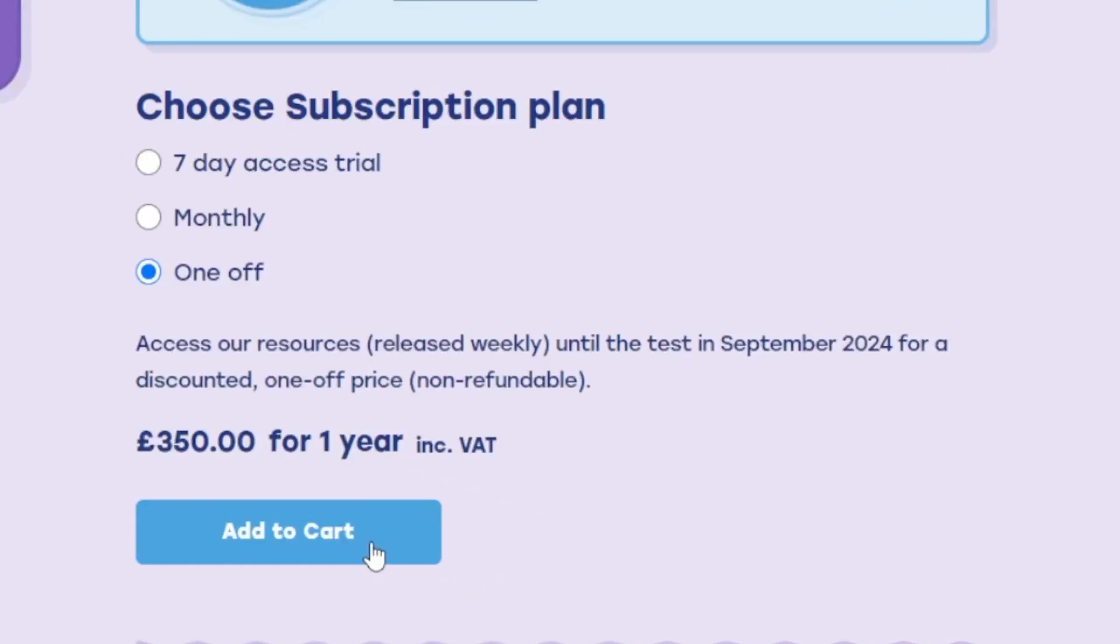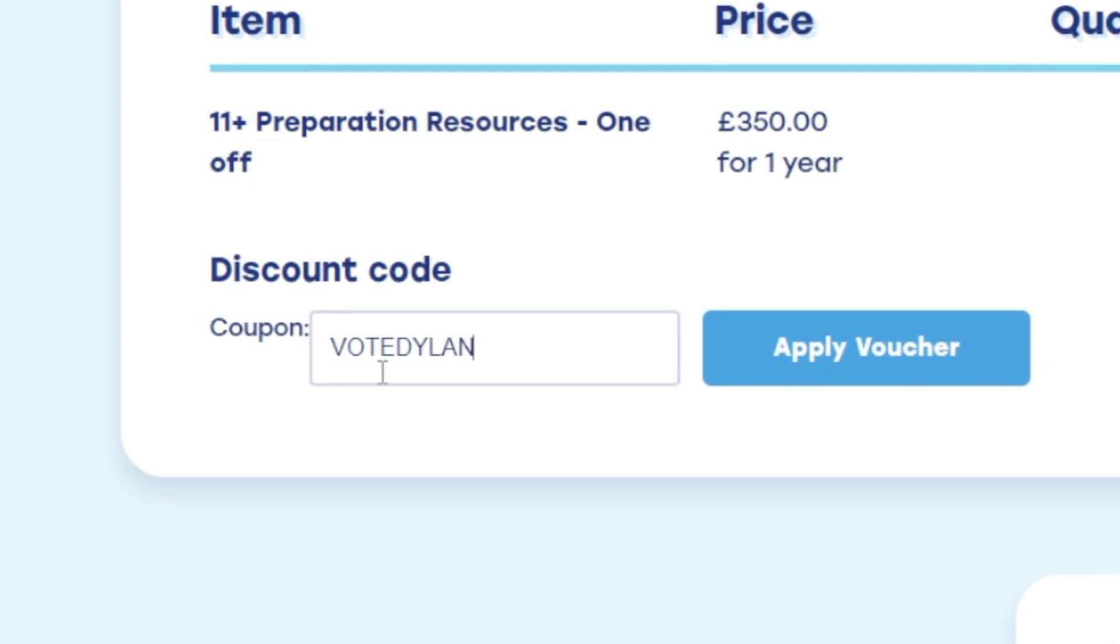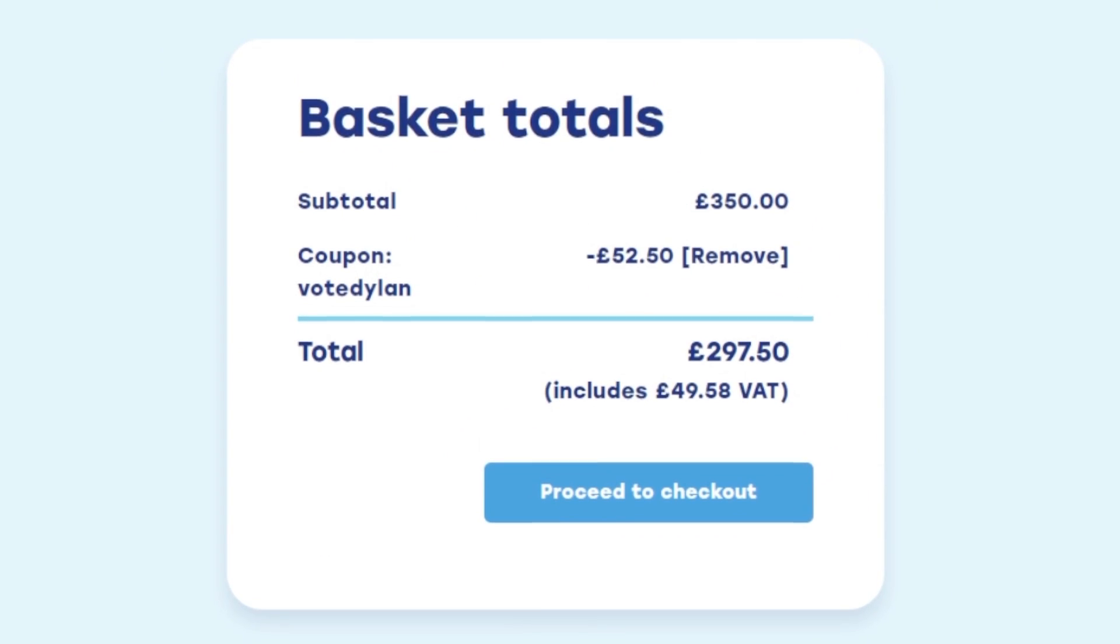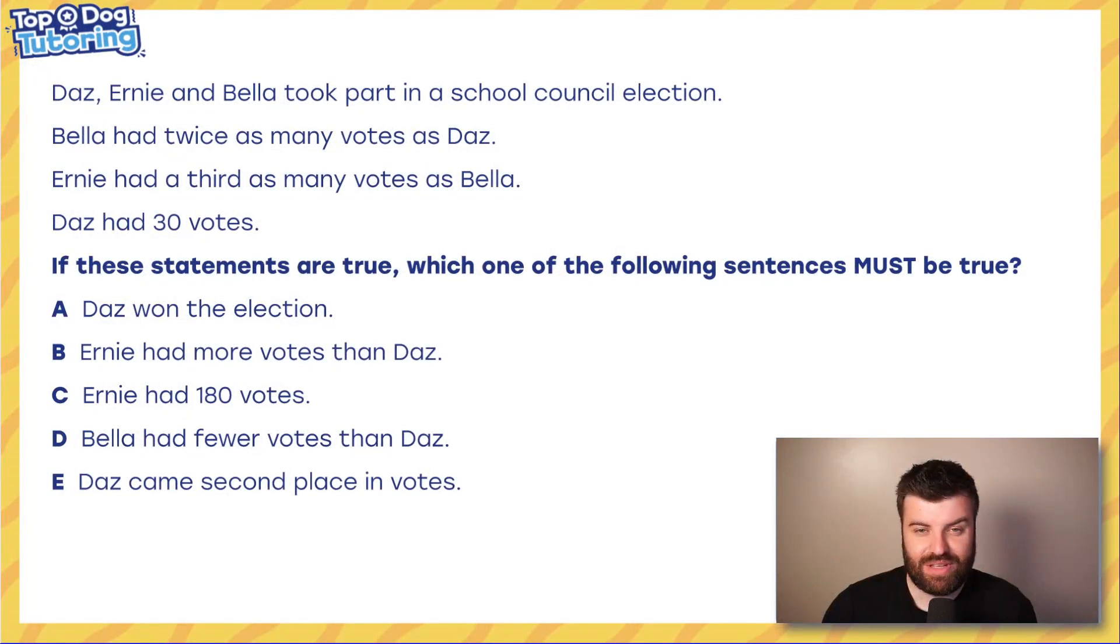All of that can be bought with our special discount code, and of course it's Vote Dylan. It's not the other one. Another one doesn't exist. All you need to do is put that into your basket, type it in, and you get 15% off access for the entire year. So if you enjoy these videos, you like the way we teach, why not come along to our website and have the full journey, the entire curriculum for the 11+.